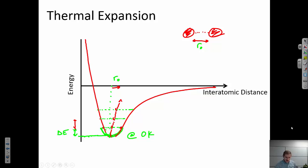If I had a perfectly symmetric bonding curve, then I wouldn't expect materials to heat up. But by virtue of the fact that there's a finite distance that they can come together and they could go infinitely far apart, it is an asymmetric curve.